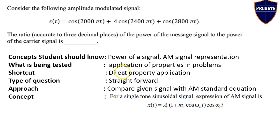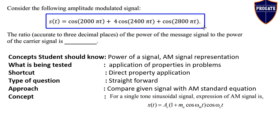To solve this question, students should know the concept of power of a signal and the standard AM signal representation. The question tests direct application of properties — there is no shortcut. There is only one method in both theory and any exam: direct property application. This is a very straightforward question. The approach is to compare the given AM signal equation with the standard AM modulated signal equation.